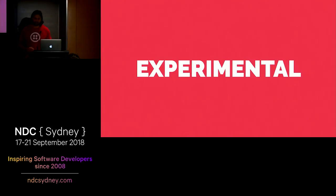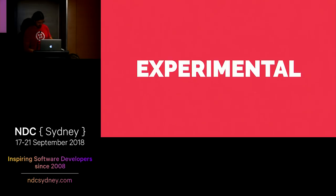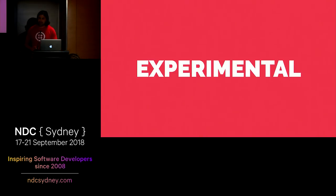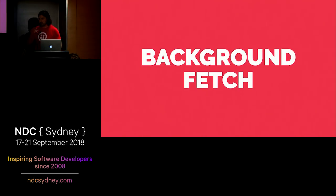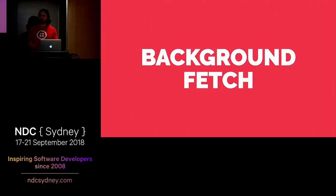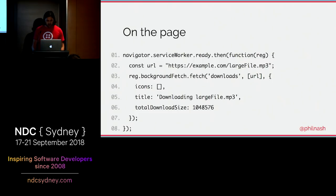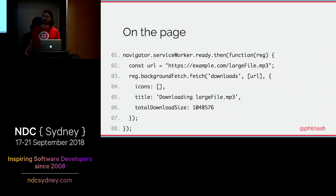I want to finish with one experimental API — one you can't and shouldn't use yet, but worth a look if you like to experiment. It's the background fetch API. Background fetch is for effectively controlling the browser's downloads section and hooking into events based on it. The idea is: if you have a large file to download, or a large number of files, you don't want to keep the user on your page while this happens.